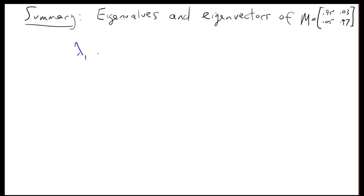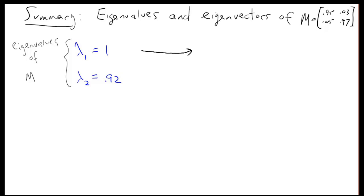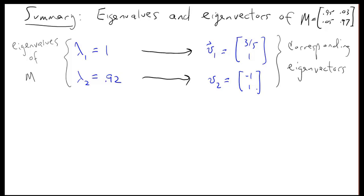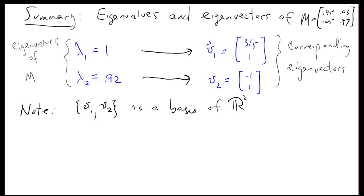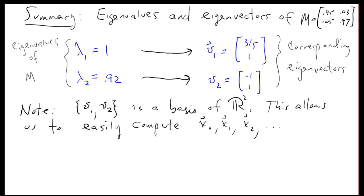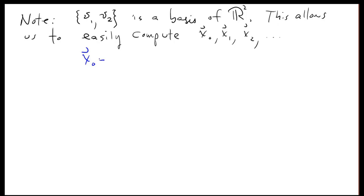In summary, the migration matrix has eigenvalue λ_1=1 with eigenvector v_1=(3/5, 1), and eigenvalue λ_2=0.92 with eigenvector v_2=(−1, 1). Note that {v_1, v_2} is a basis of R^2 because these are linearly independent vectors, and any two linearly independent vectors in R^2 automatically form a basis. This allows us to easily compute the sequence of population vectors x_0, x_1, x_2, and so forth.